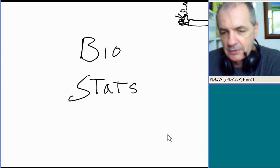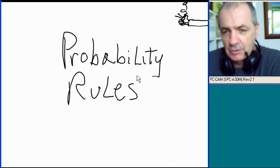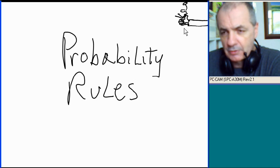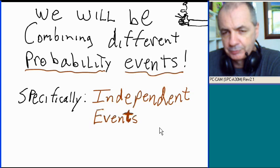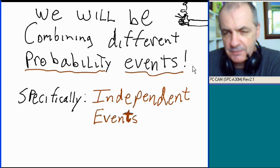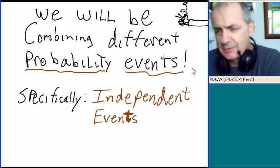Biostats — Biological Statistics. Let's talk about probability rules. Just think of this guy over here tossing a coin up in the upper right-hand corner of the screen. We will be combining different probability events.